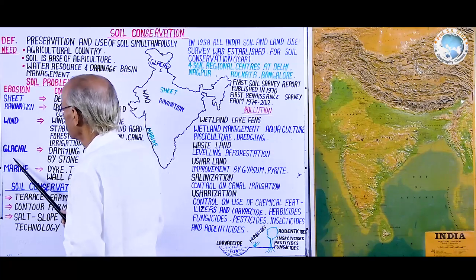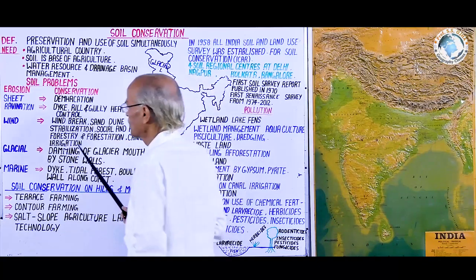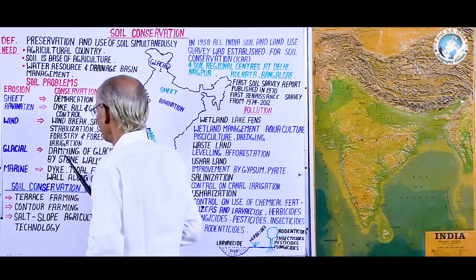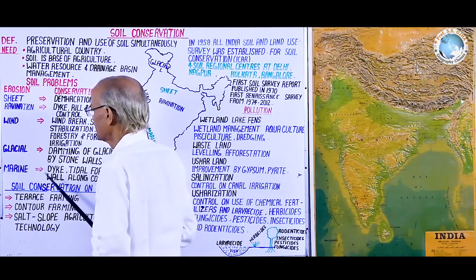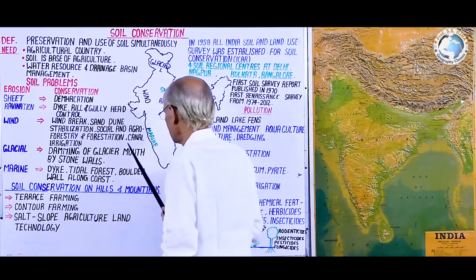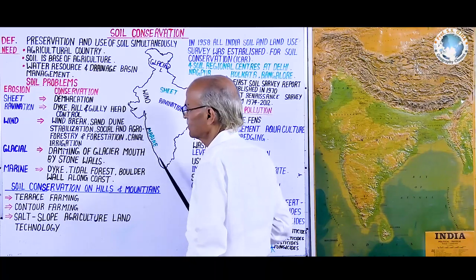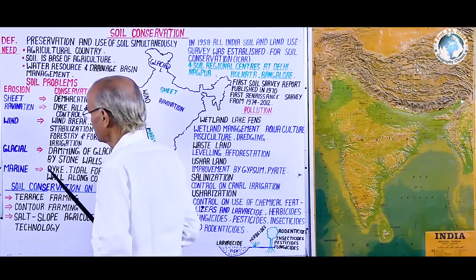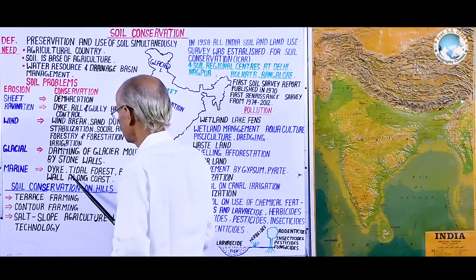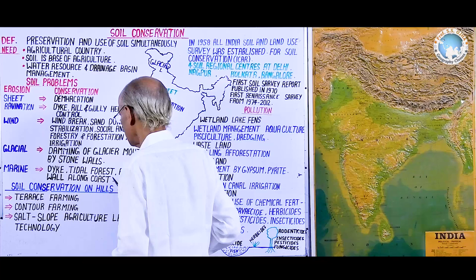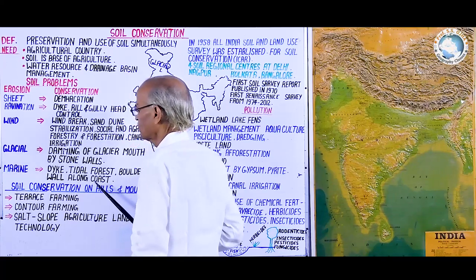Next is glacial erosion, found in the Greater Himalayan region. To control fertile soil from glacial erosion, damming of glacial mouths with stone walls is the way. Next is marine erosion, largely found in the western coastal plain and to some extent along the Coromandel coast. To protect fertile coastal soil from being eroded by marine processes, construction of dikes, tidal dikes, tidal forests, and boulder walls along the coast is the method.